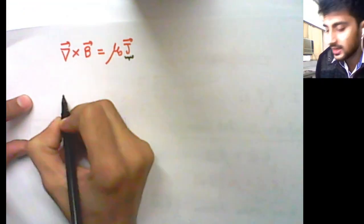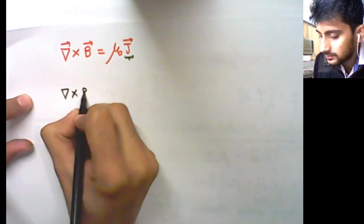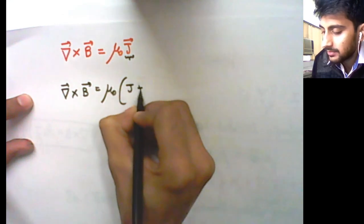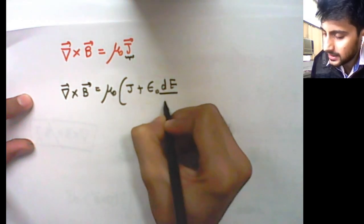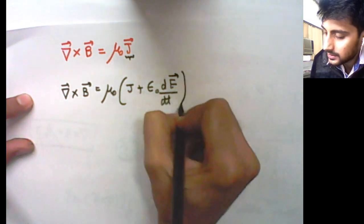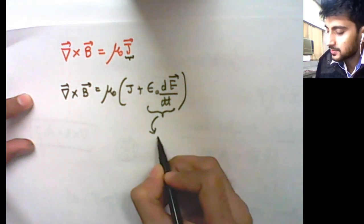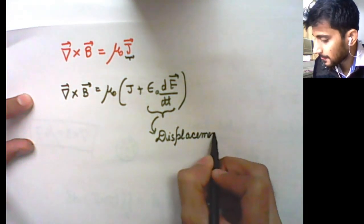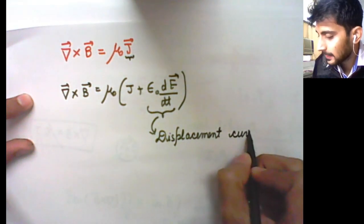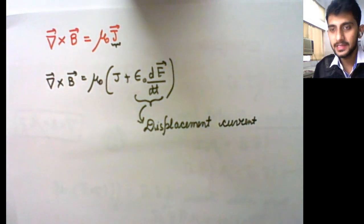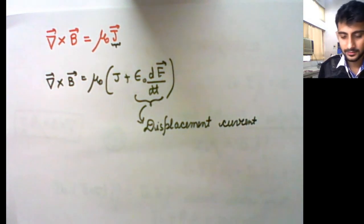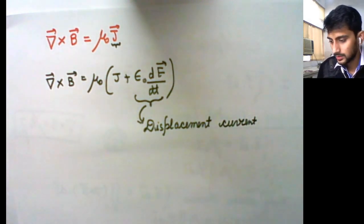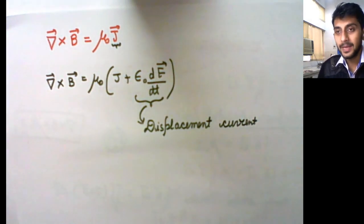Instead of just writing it as J, we will do a small correction. The equation becomes del cross B equals mu naught J plus epsilon naught times del E by del T. Remember, this small added term is called the displacement current density, and we have seen this in the last lecture.